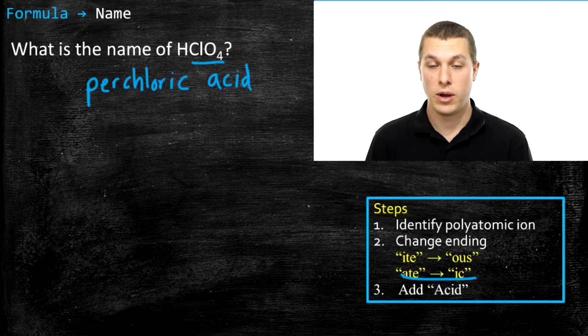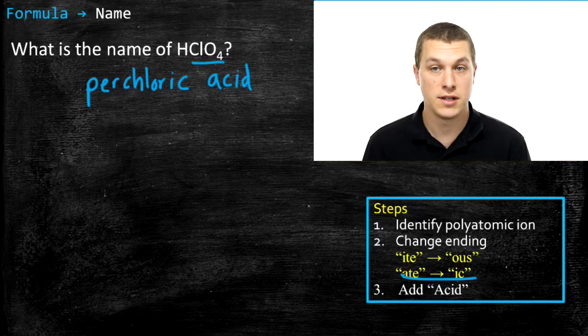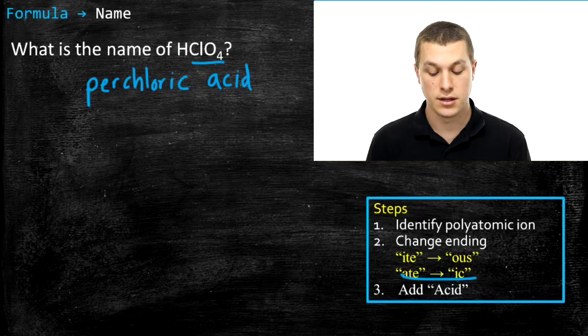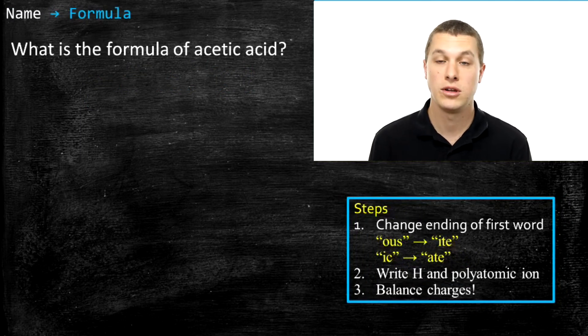So that's basically the way we do this. We identify the polyatomic ion, we change the ending, and we add the word acid. Let's take a look at going the other direction. Now we're going to start with a name and go to a formula. How do we do that?